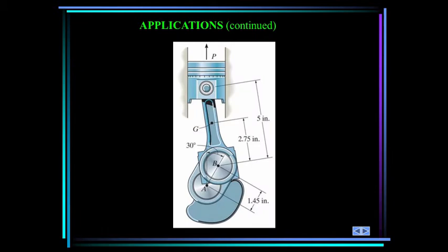In an automotive engine, the forces delivered to the crankshaft and the angular acceleration of the crankshaft depend on the speed and acceleration of the piston. How can we relate the accelerations of the piston, connecting rod, and crankshaft to each other?